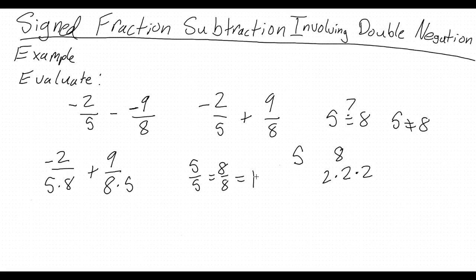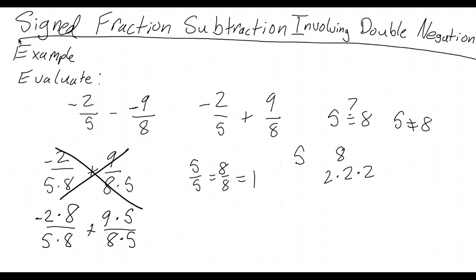So the corrected expression is negative 2 times 8 over 5 times 8 plus 9 times 5 over 8 times 5. This simplifies to negative 16 over 40 plus 45 over 40.